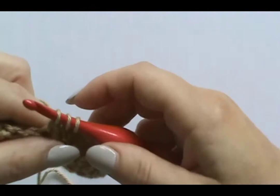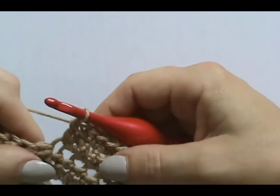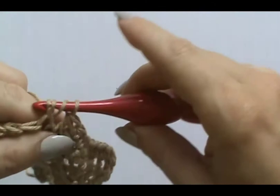Yarn over and draw through the first two, leaving you three. Yarn over and pull through the remaining three. And that closes up that gap.